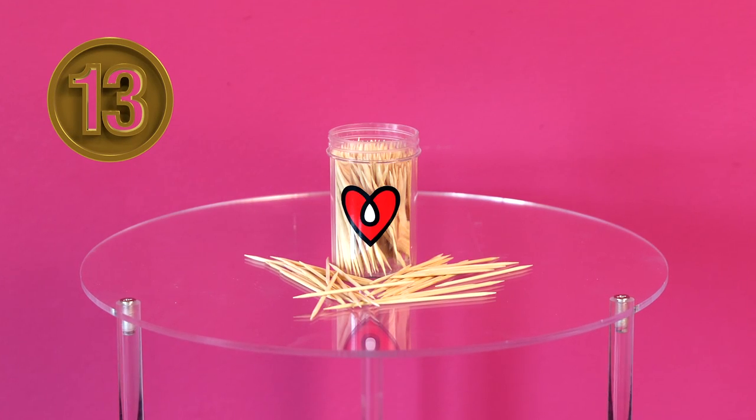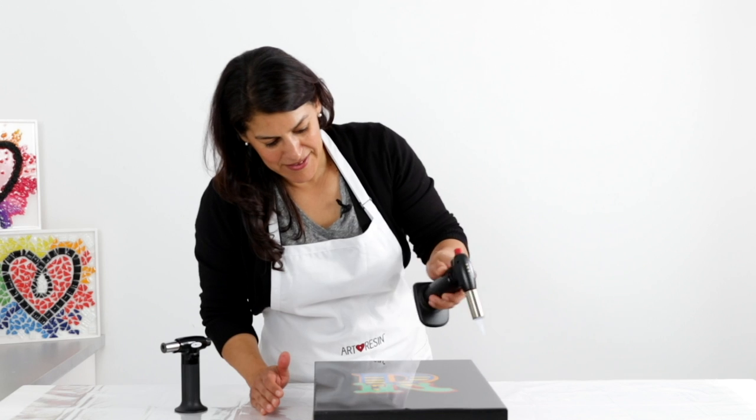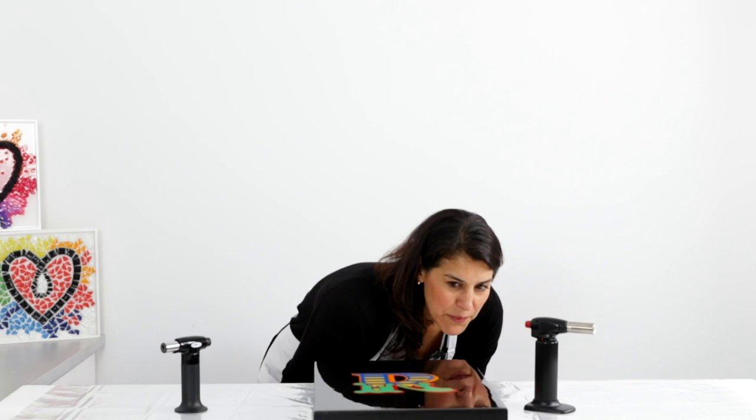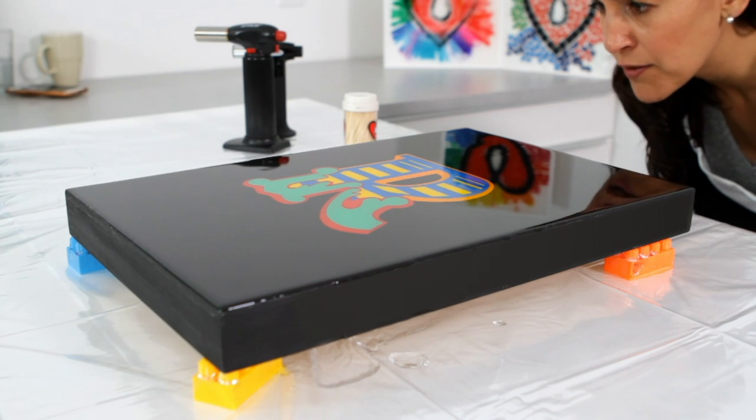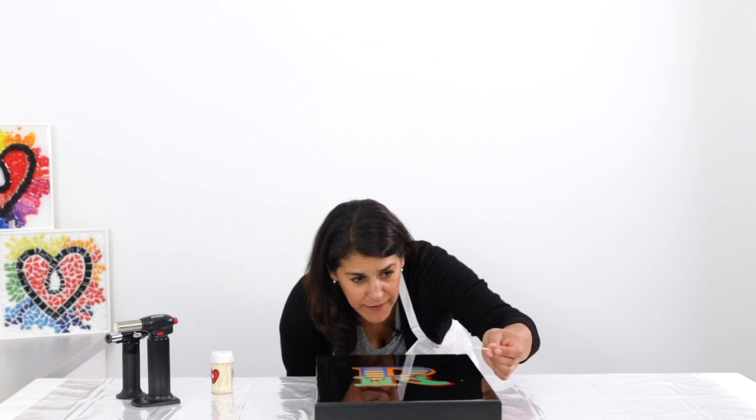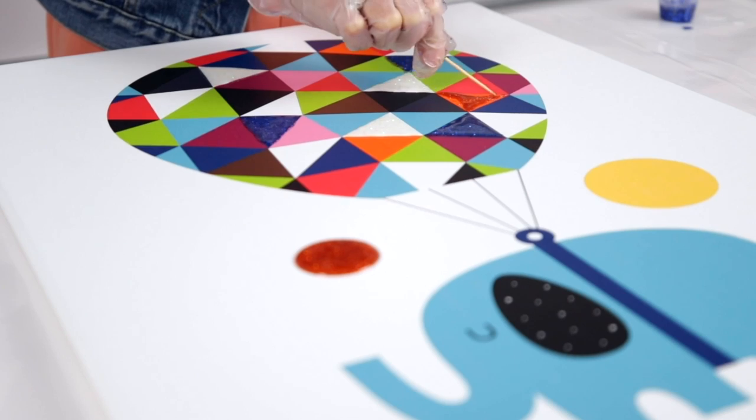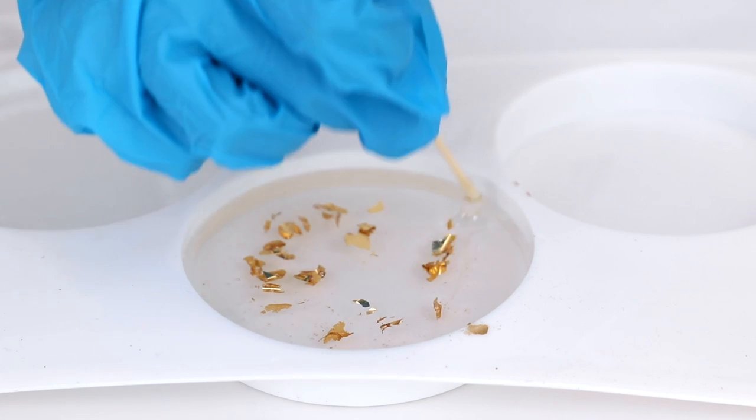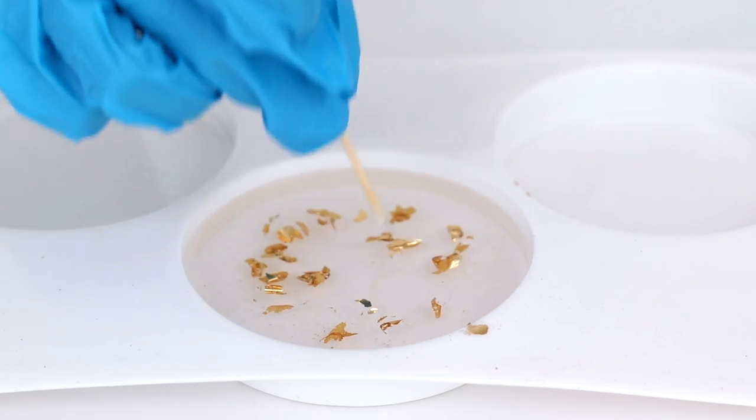Thirteen, toothpicks. Toothpicks are indispensable when resining. After you've torched your piece, look at your artwork at eye level under a light source and use a toothpick to pop stray bubbles or to fish out bits of dust. They're also handy if you want to nudge small amounts of resin around or to place things like gold leaf or other embellishments exactly where you want them.